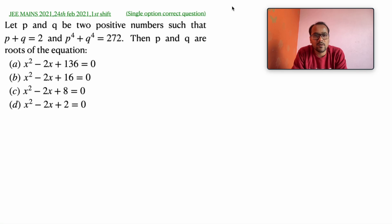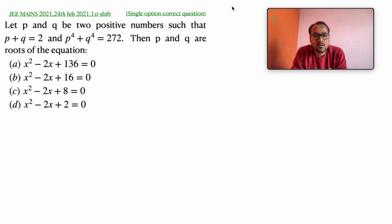Hello dear friends, I hope everybody is well and preparing well for the upcoming JEE exams. This question is from JEE Mains 2021, 24th February, first shift. It is a single option correct question. In this question, it is said that let p and q be two positive integers such that p plus q equals 2, and p raised to power 4 plus q raised to power 4 equals 272.